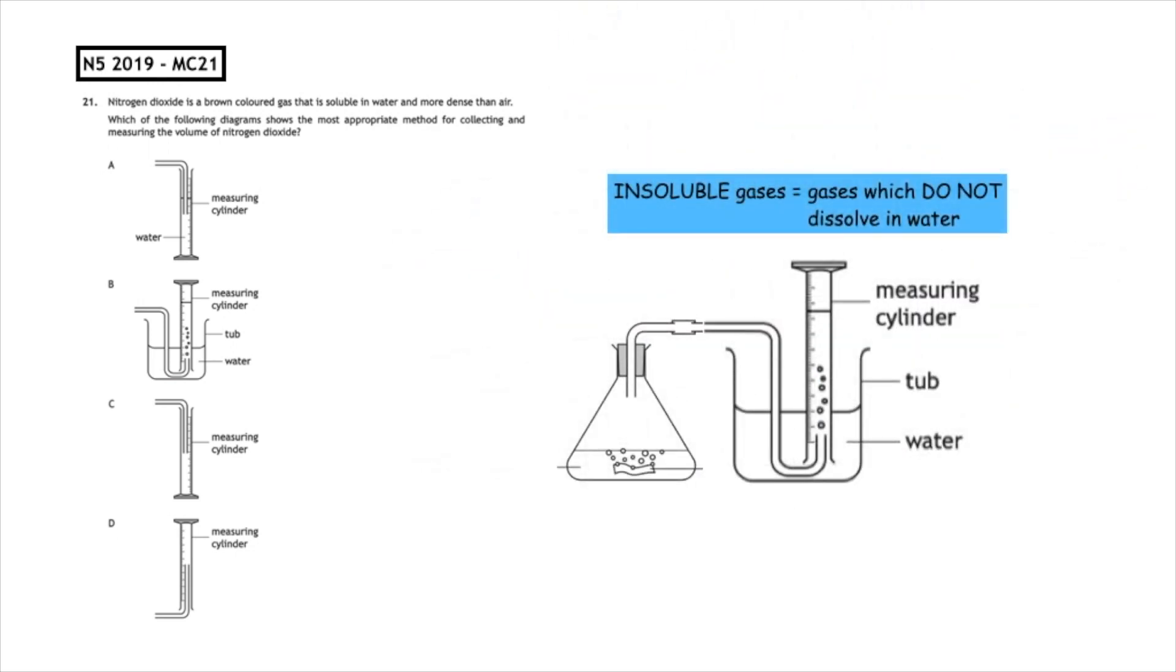That leaves us with C and D. The next part of the text that gives us context is that it's more dense than air. If something's more dense, it means it's heavier. Heavy things sink, which means the correct method we would use would be method C.